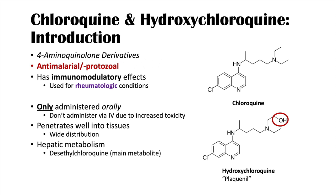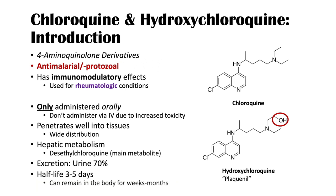The main metabolite of the metabolism of these medications is desethylchloroquine. They are mainly excreted in the urine — about 70% of it is excreted that way. They have a half-life of about three to five days. Because of their wide distribution in the body and their moderate half-life, they can last in the body for weeks to months.